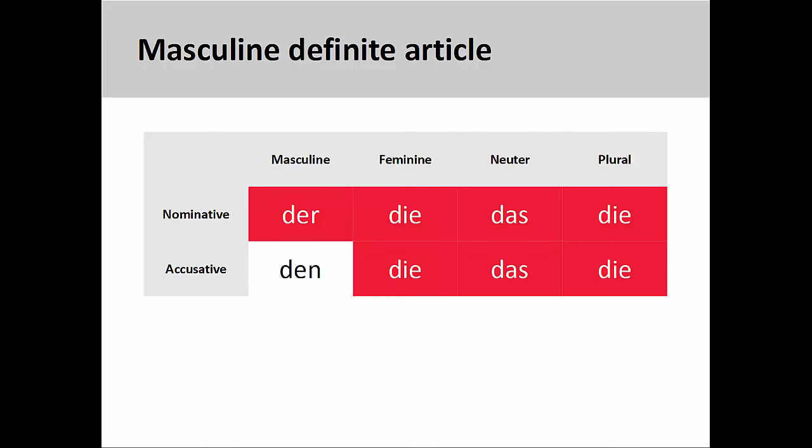Or perhaps you can think of the definite article Den as the only one that does not belong to a select group of definite articles — it got voted off the island. Whatever way works best for you, the masculine definite article is the only one we really have to worry about, at least in the nominative and accusative cases.